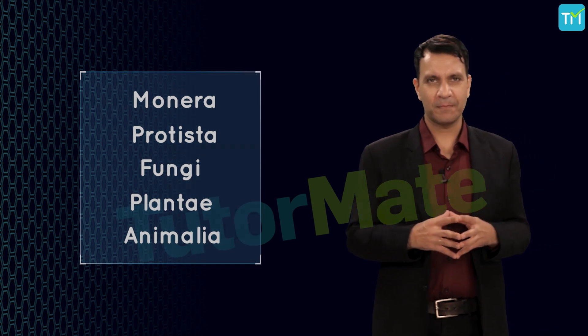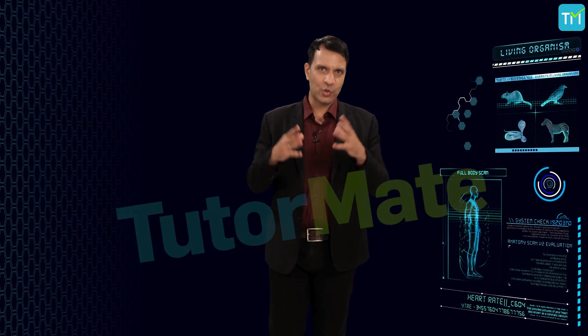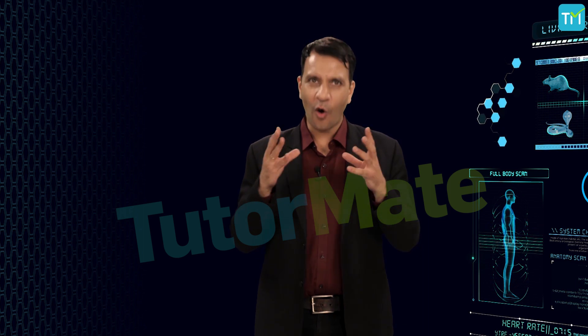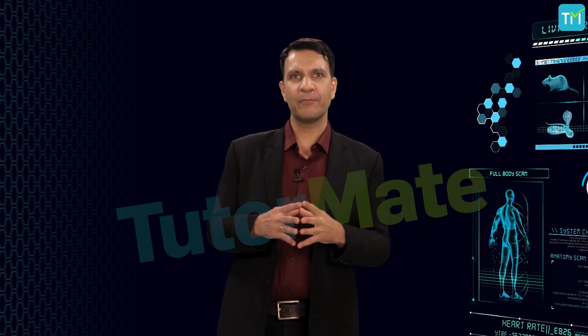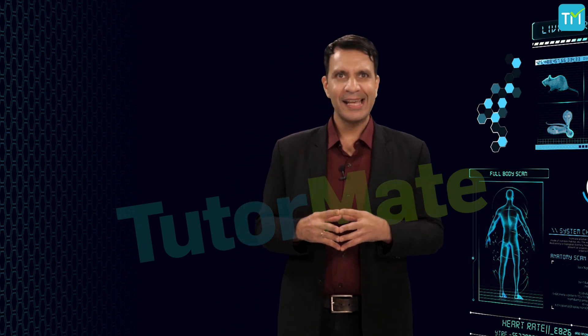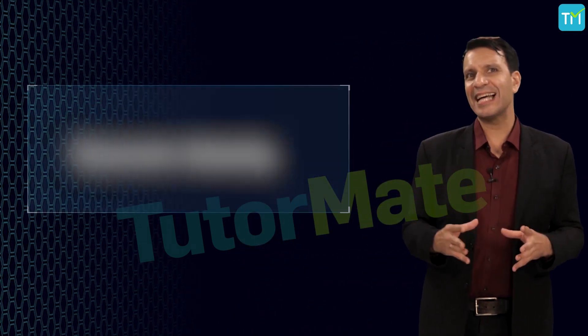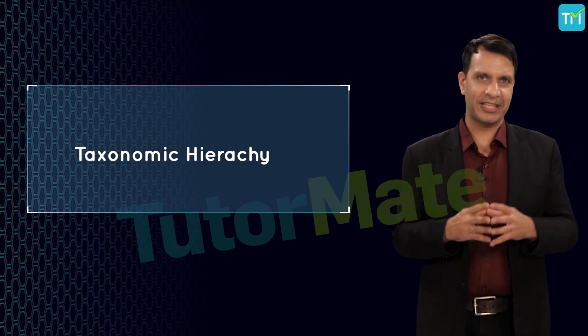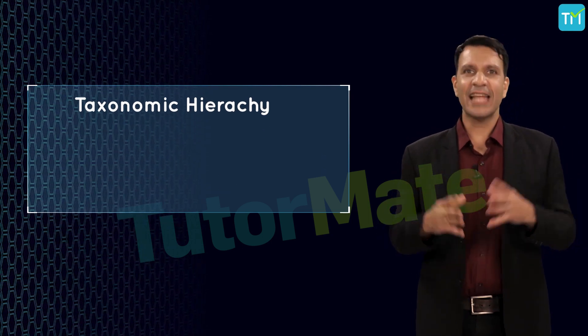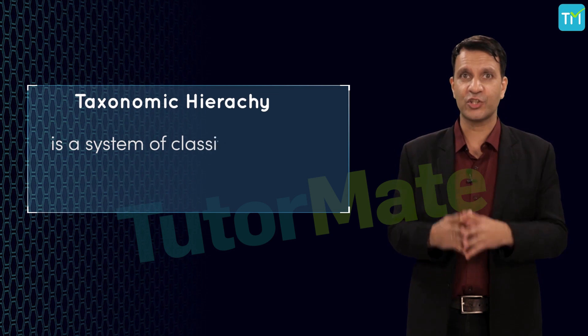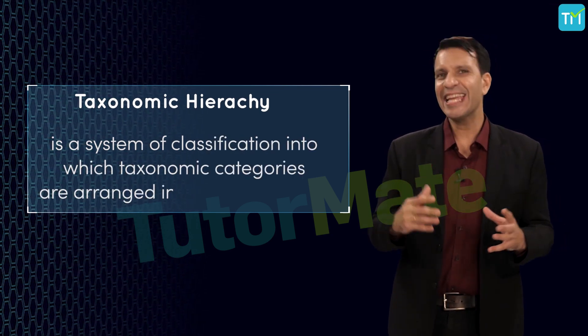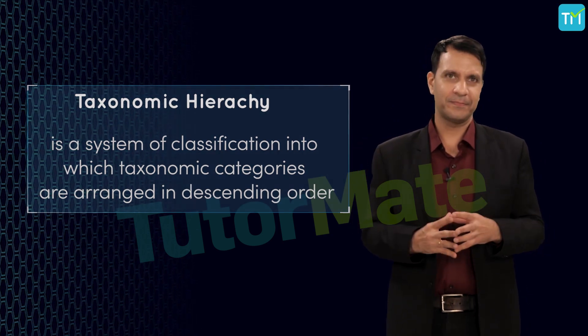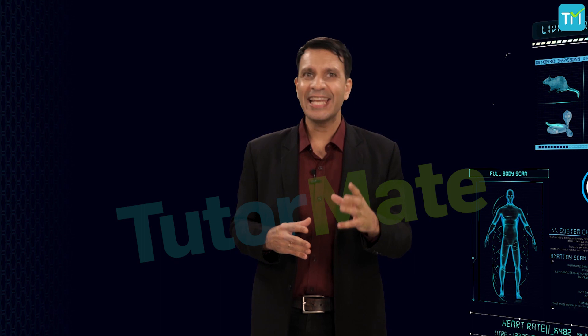Now, the main aim of a taxonomic study is to assign organisms an appropriate place within the systematic framework of classification. This framework is called the taxonomic hierarchy. In other words, taxonomic hierarchy is a system of classification into which taxonomic categories are arranged in descending order.